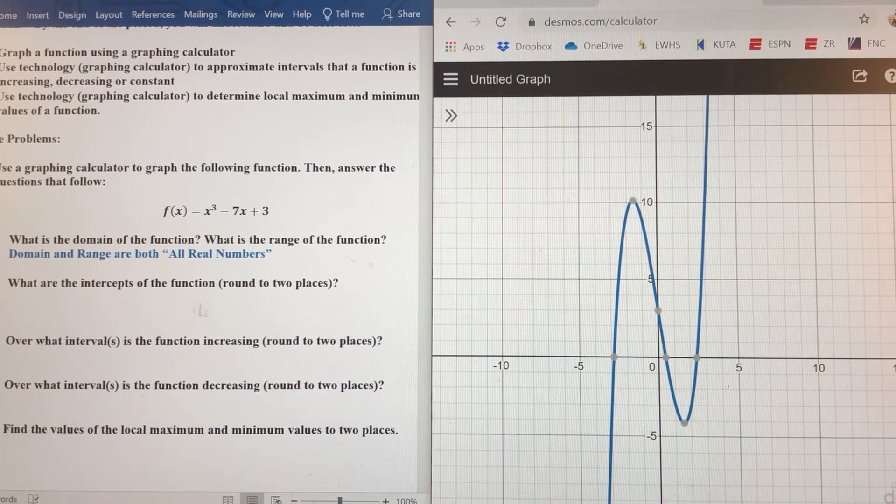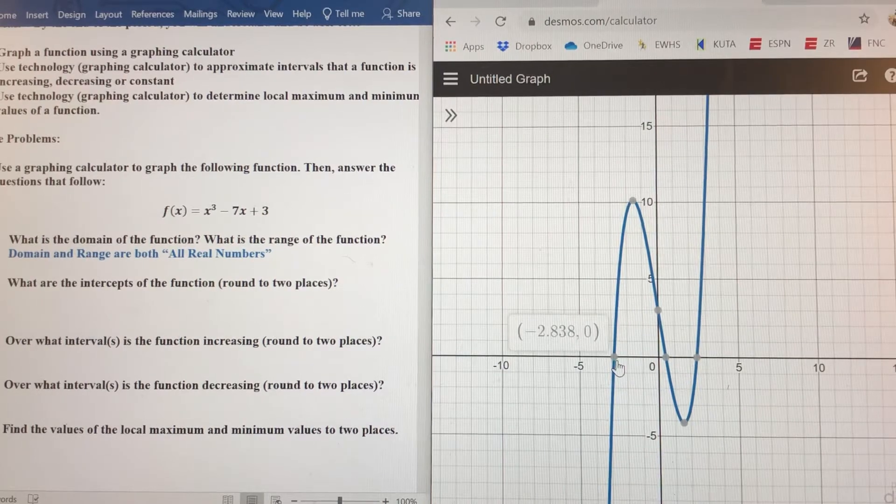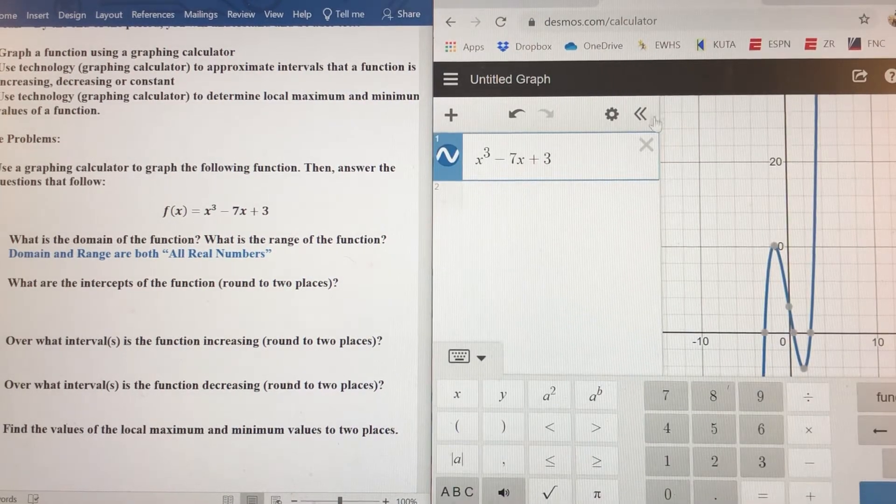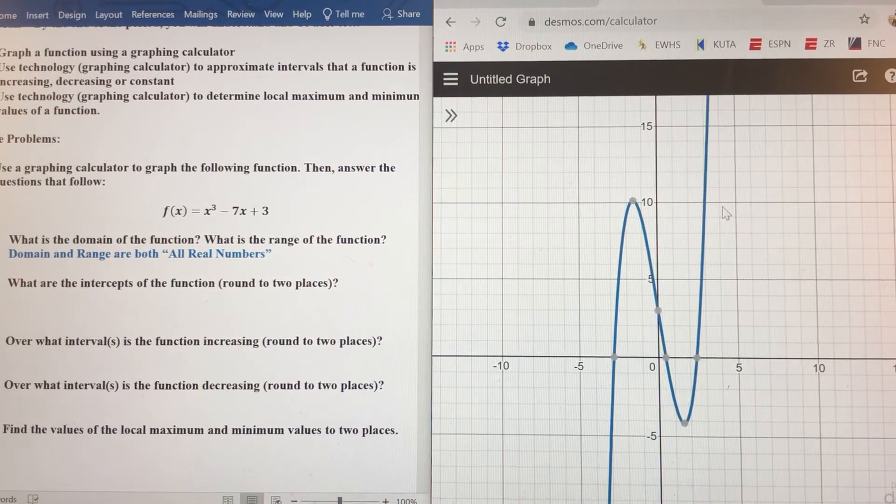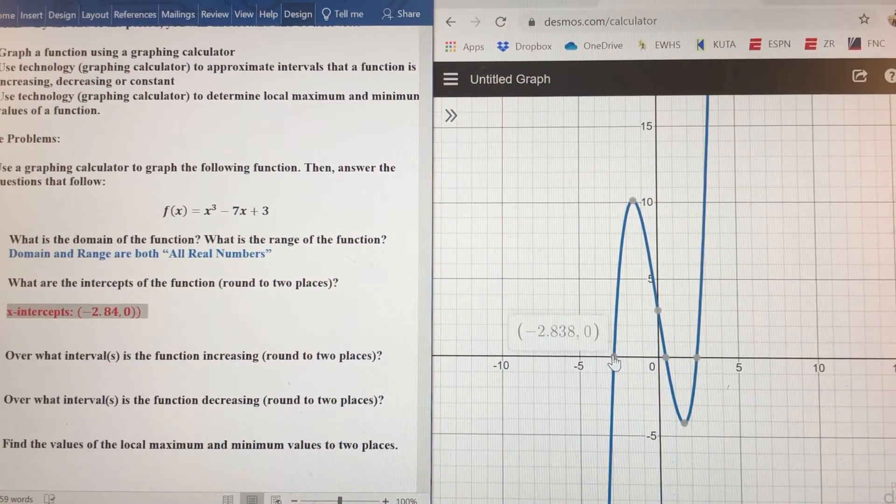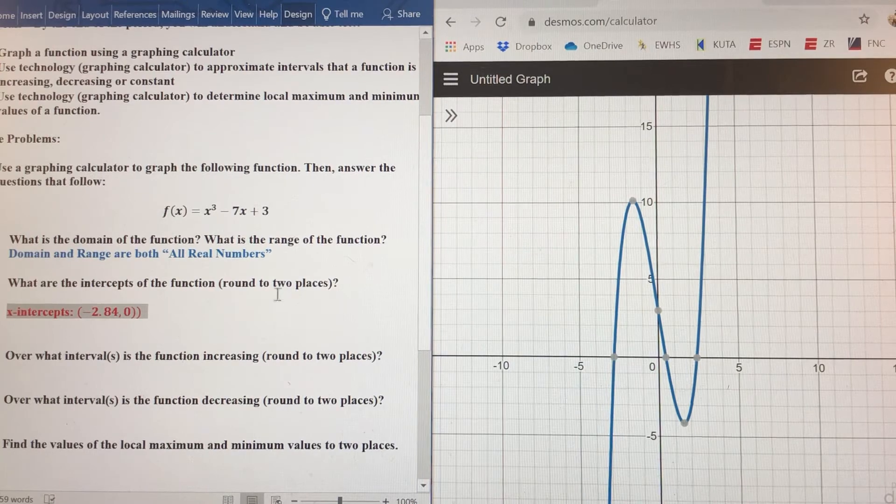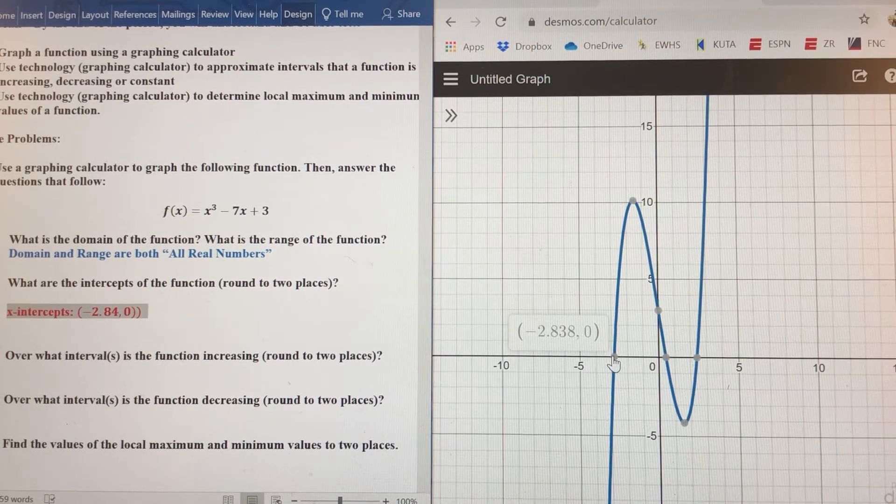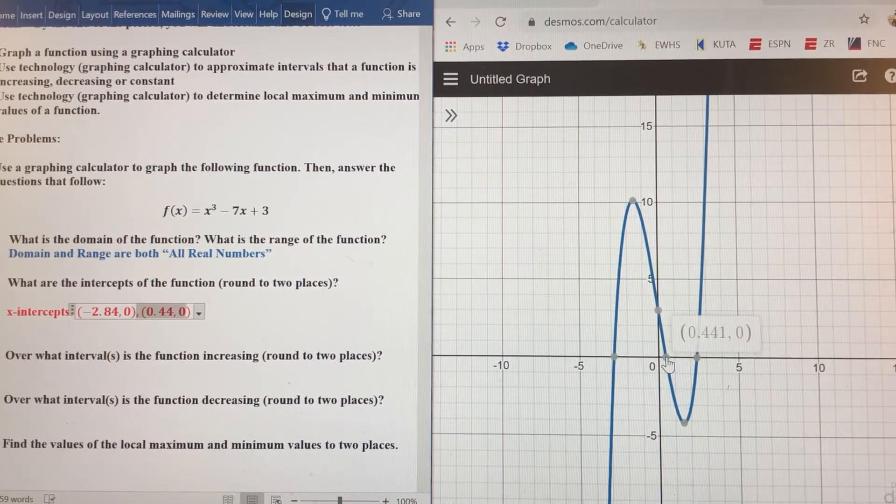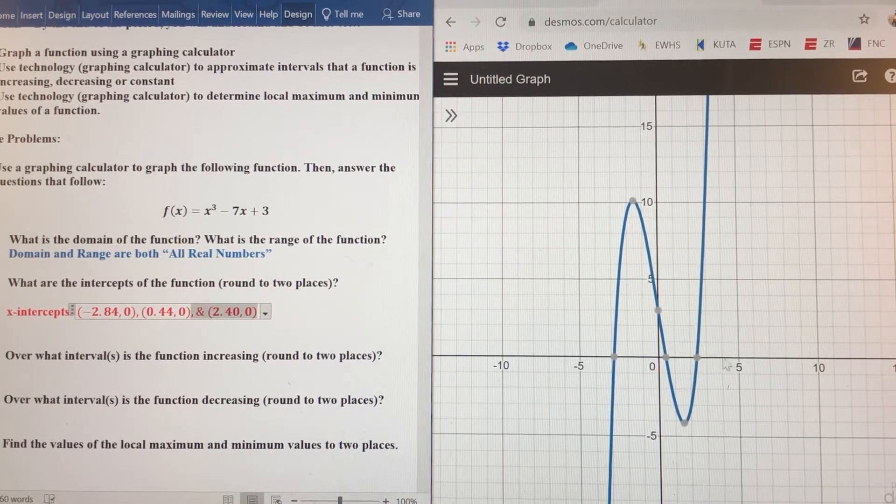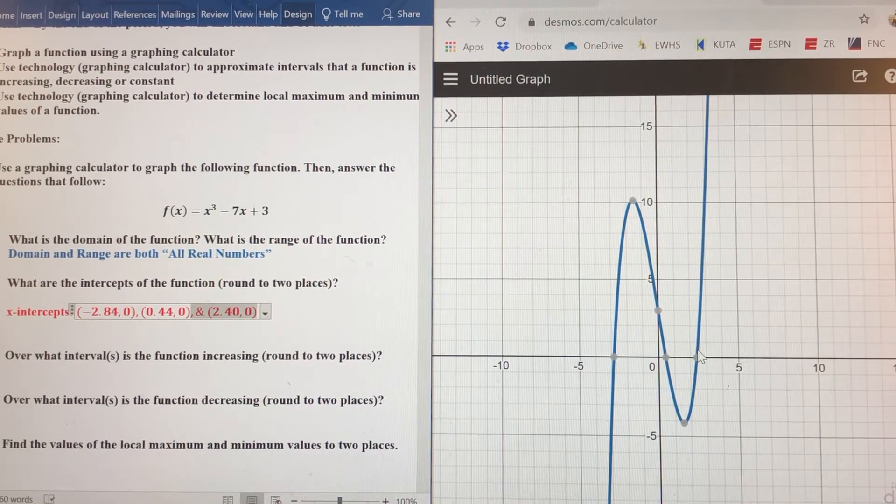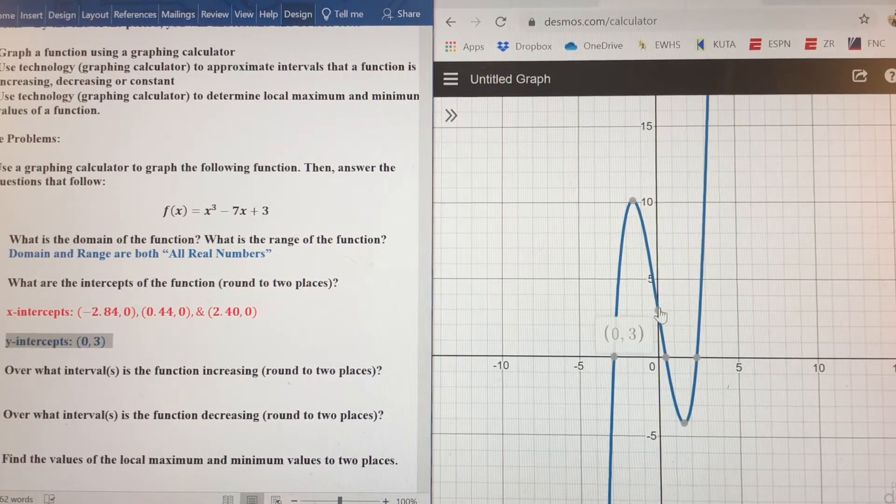So the intercepts of the function, notice we have three x-intercepts. The first one is at negative, about negative 2.84. Notice it says round to two places. So negative 2.84 and zero. The next one is going to be at 0.44 comma zero.